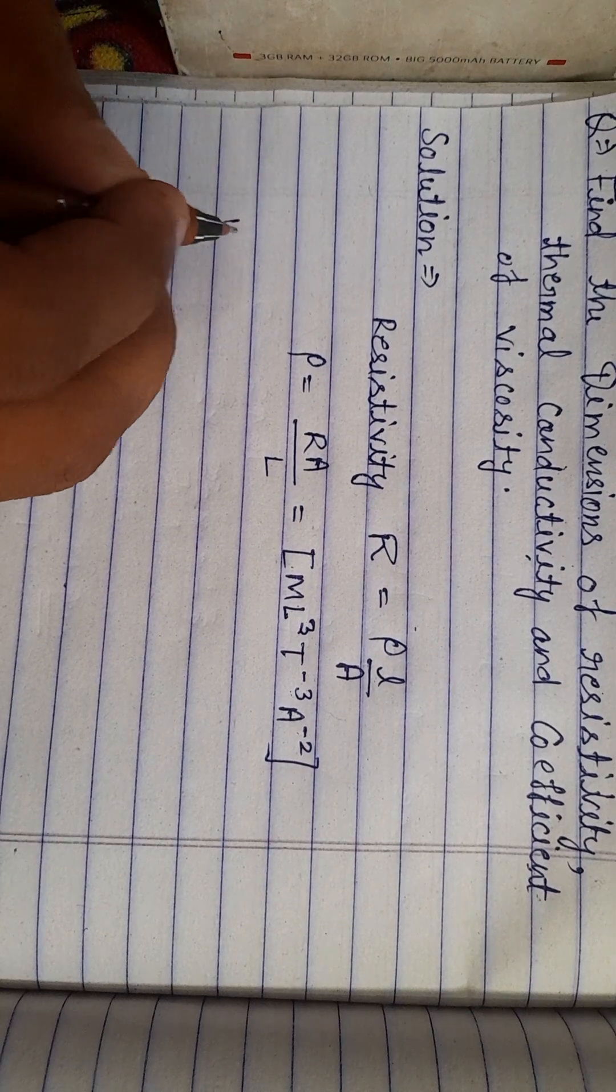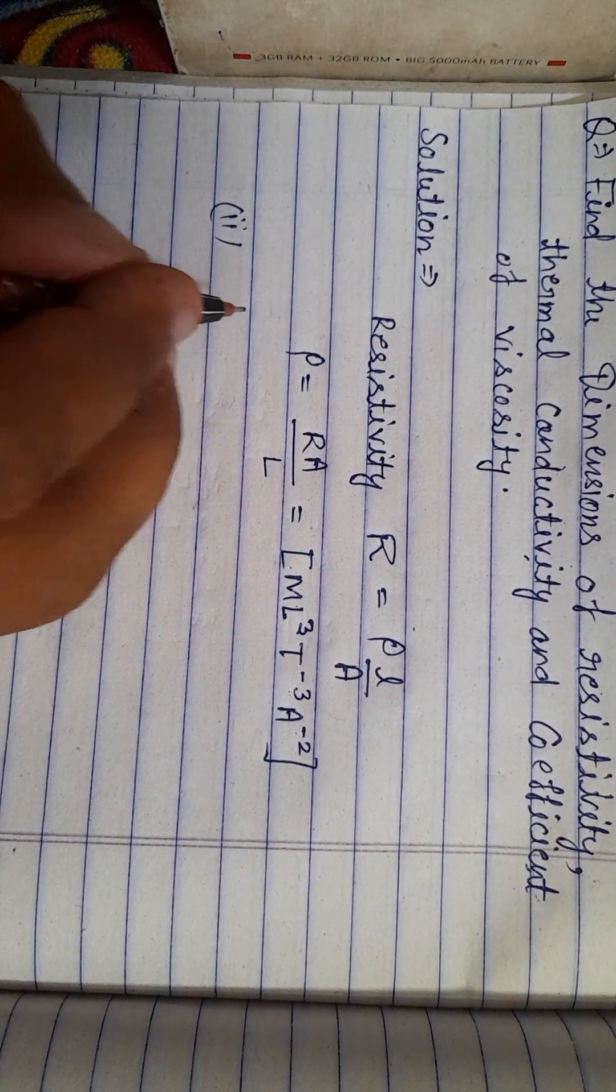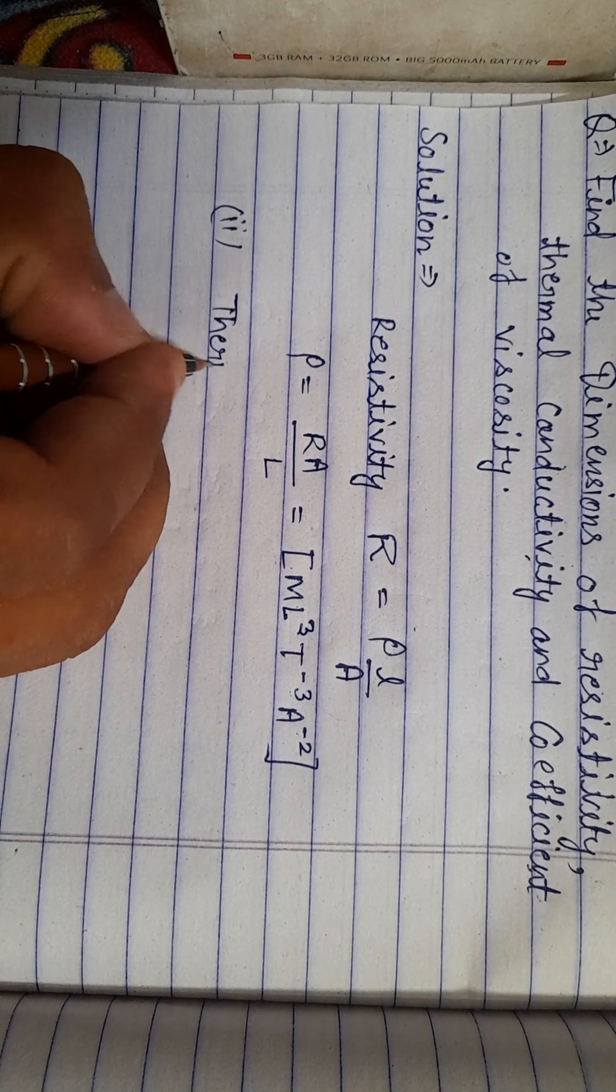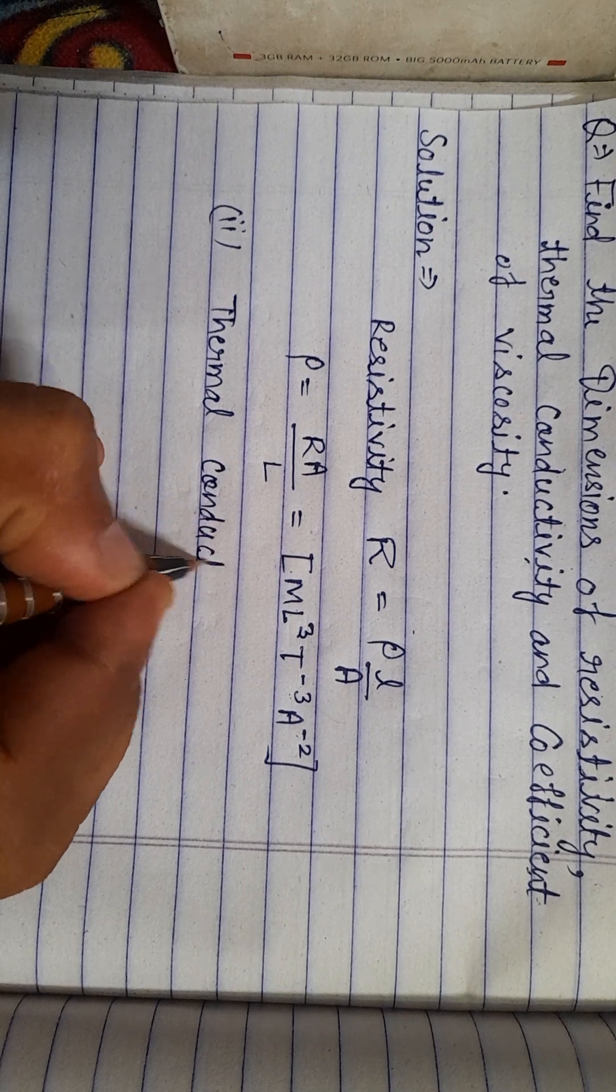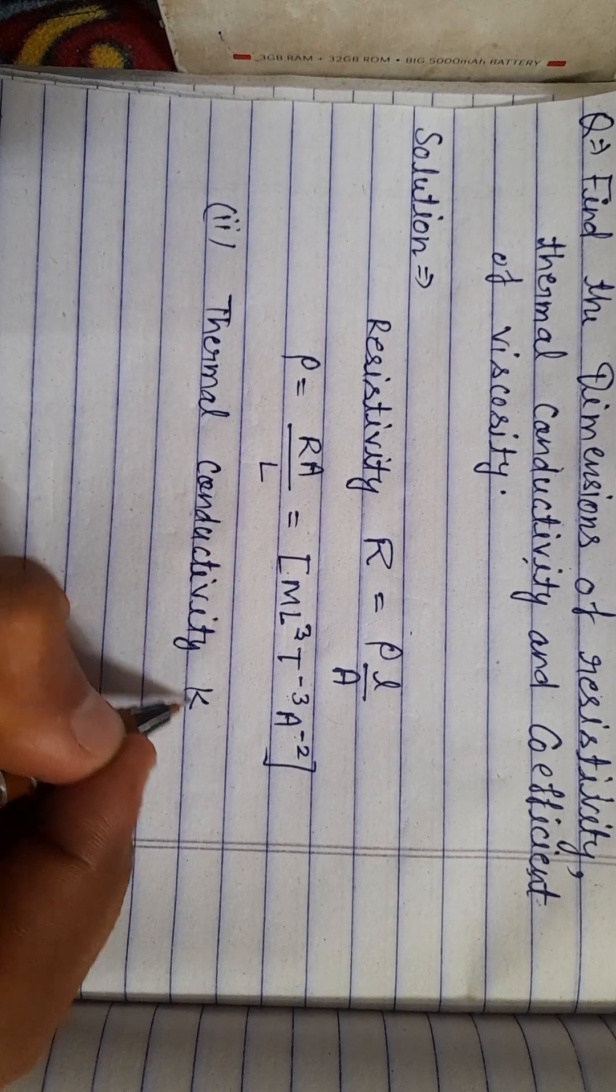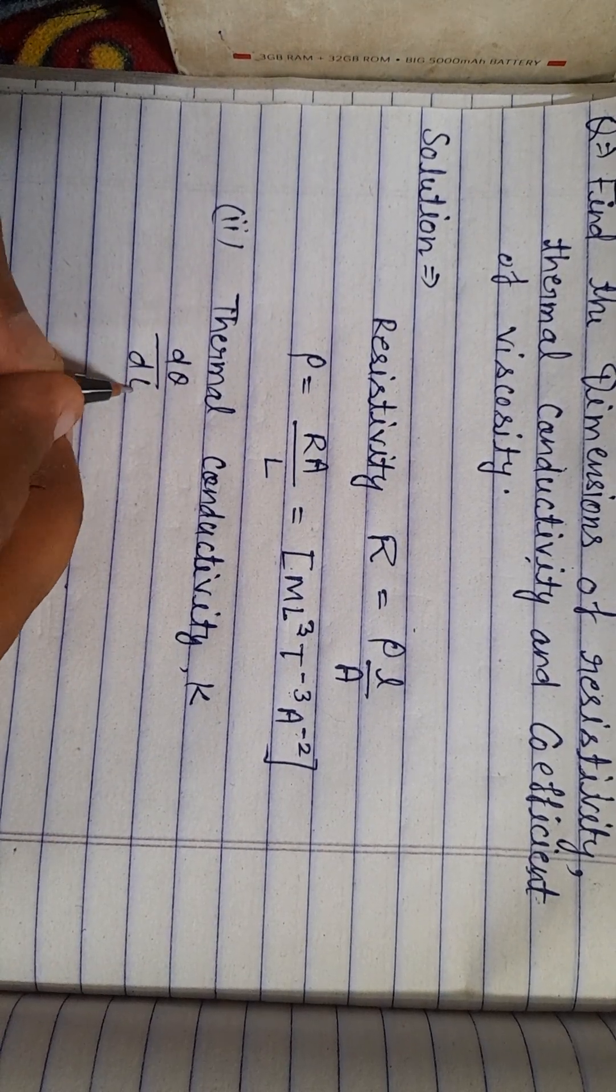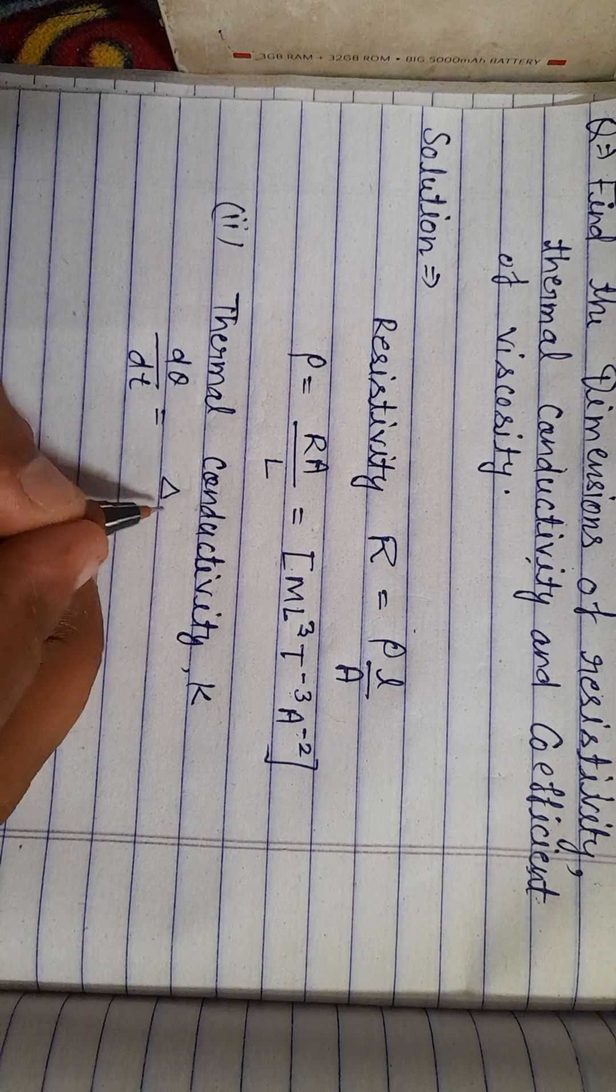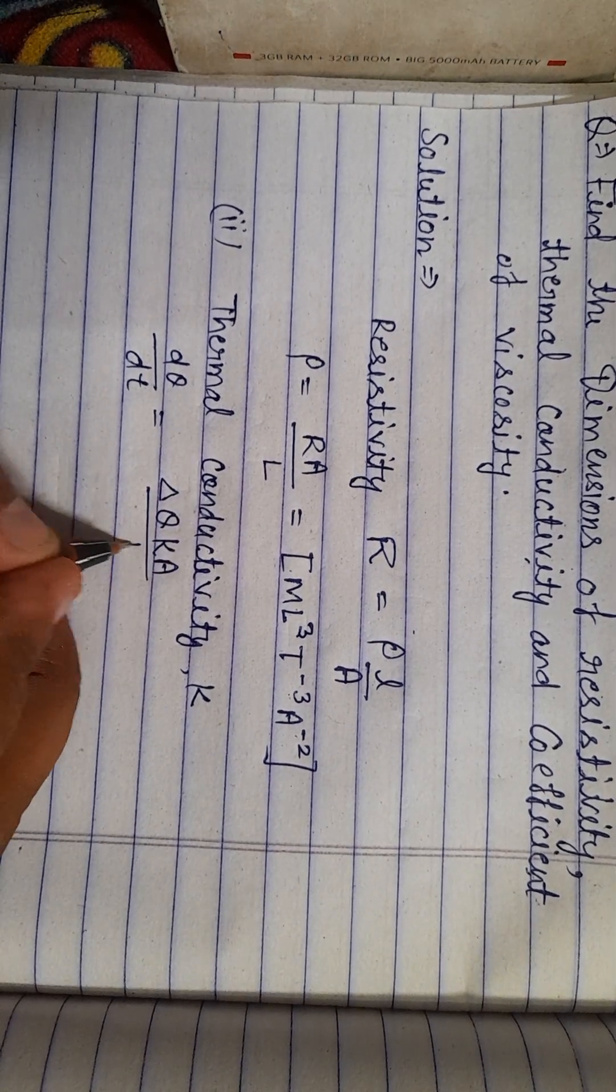Second, thermal conductivity. Thermal conductivity K: D Q upon D T is equal to delta theta K A upon L.